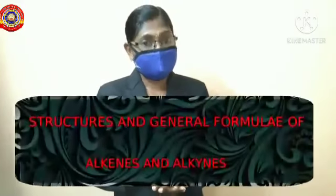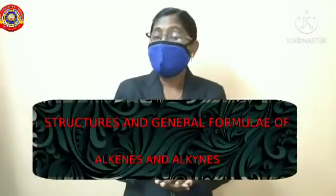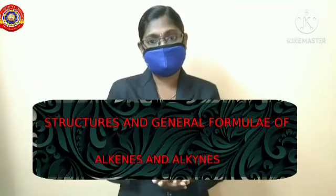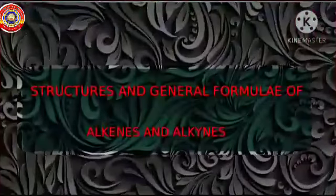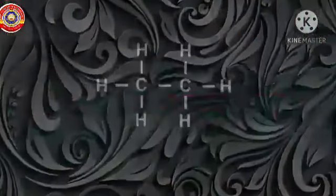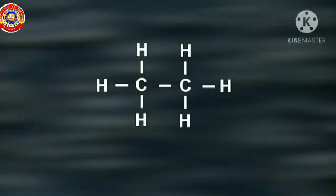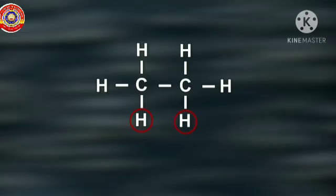Today you are going to learn about the structures and general formulae of alkenes and alkynes. Observe the structure of an alkane - the carbon atoms are bonded through a single bond. Let's see how the valency of carbon is completed when one hydrogen atom each is removed from each carbon atom.